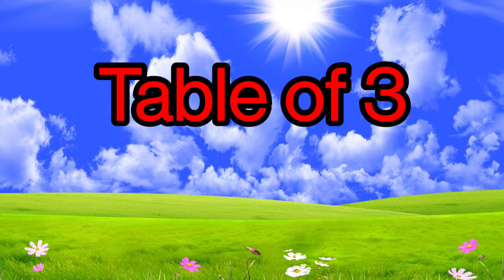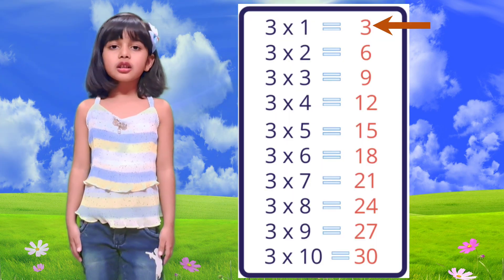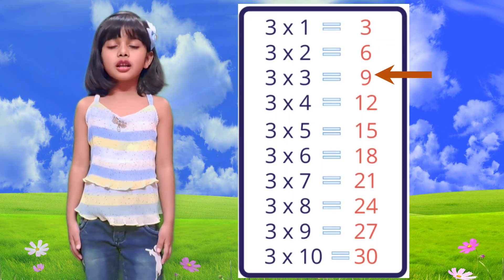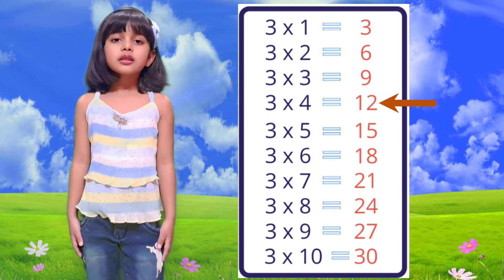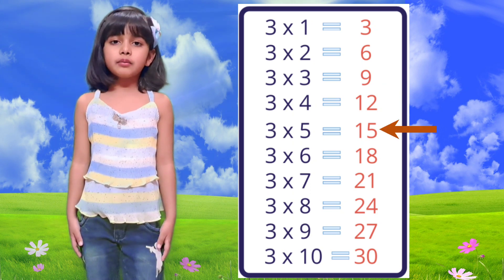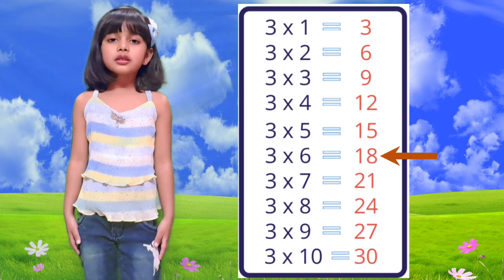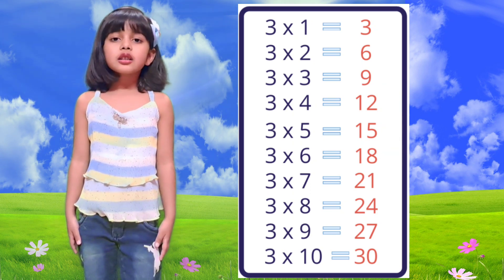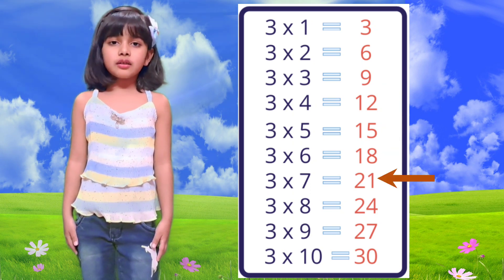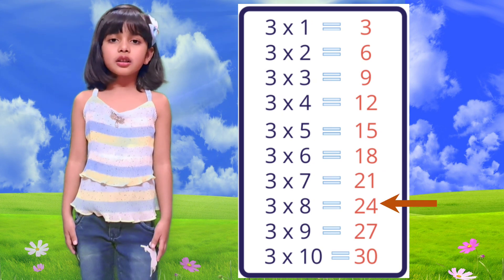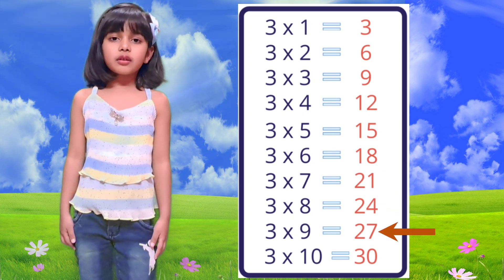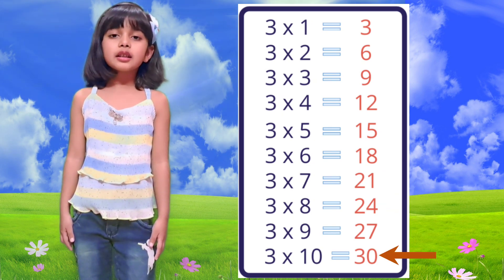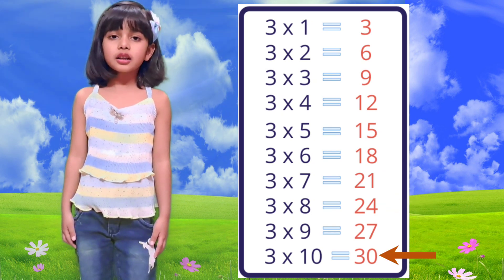Table of 3. 3 1 is 3, 3 2 is 6, 3 3 is 9, 3 4 is 12, 3 5 is 15, 3 6 is 18, 3 7 is 21, 3 8 is 24, 3 9 is 27, 3 10 is 30.